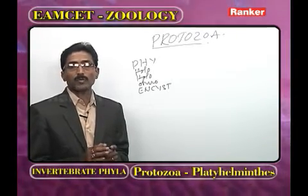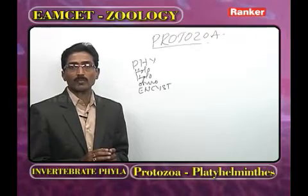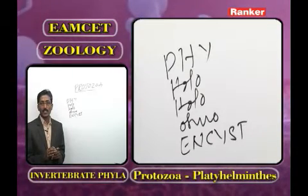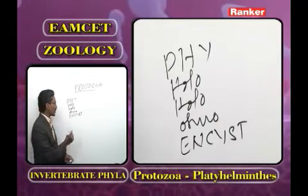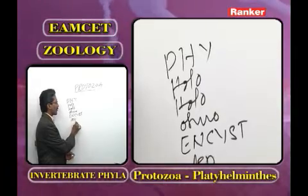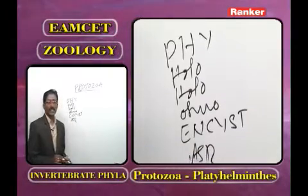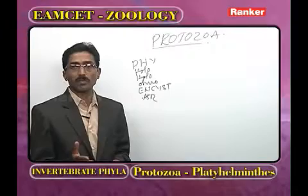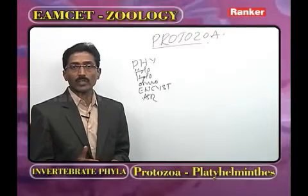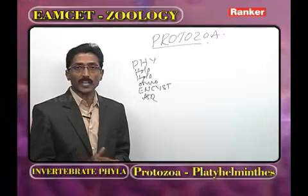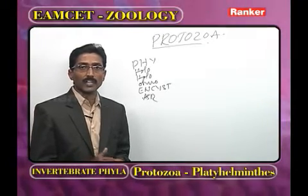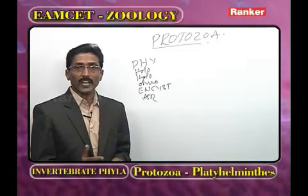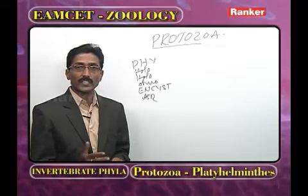Whenever conditions are favorable, Protozoans perform asexual reproduction, brought by many methods: binary fission, multiple fission, sporulation, and budding. The most important method is binary fission.